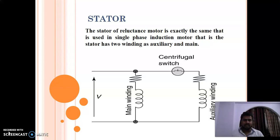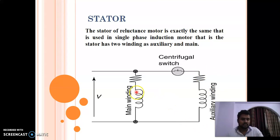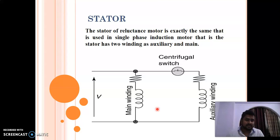Like a single-phase induction motor, there are two windings: main winding and auxiliary winding. You can see that here also we have main winding and auxiliary winding placed at 90 degrees with each other, and a centrifugal switch connected between these two windings. These stator windings — main and auxiliary — are excited with the help of a single-phase supply. The rotor is placed in between the main and auxiliary windings. The reluctance motor stator is similar to that of a single-phase induction motor.